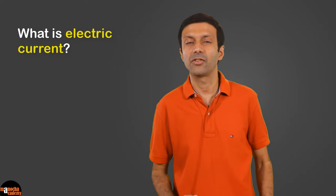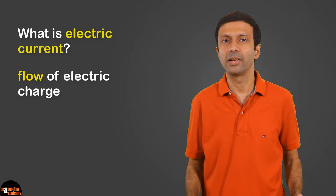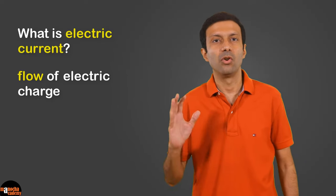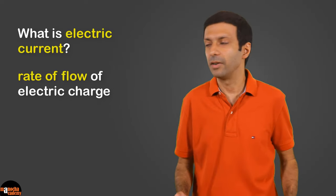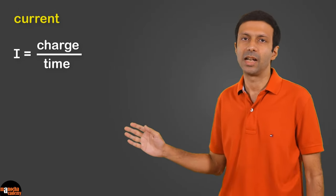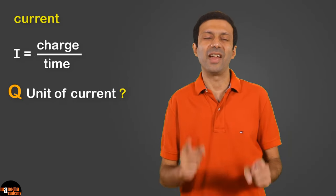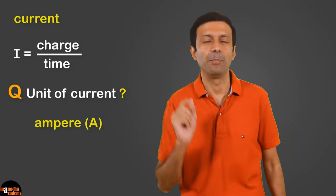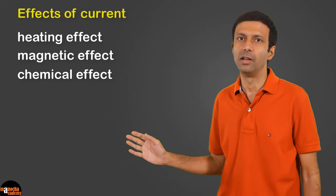First, let me ask you what is electric current? Electric current is the flow of electric charge and numerically it is defined as the rate of flow of electric charge. The formula of current is charge divided by time. The unit of current is ampere. Electric current can produce three important effects: heating effect, magnetic effect and chemical effect.